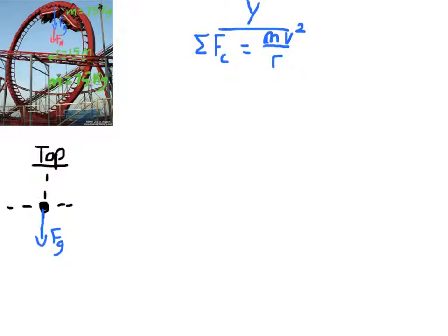At the very top of the roller coaster, the only force in my free body diagram is the force of gravity. The roller coaster would have a velocity tangential to the path, but that's not a force — it's just the tangential velocity. So in the y-axis, the only force is gravity, and that's what's providing the centripetal force when we're solving for the minimum speed to go through a loop.